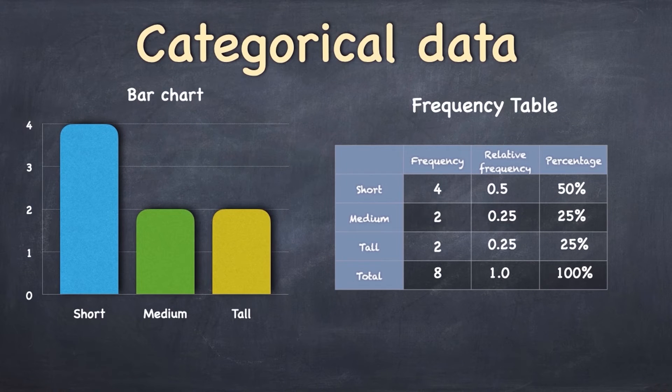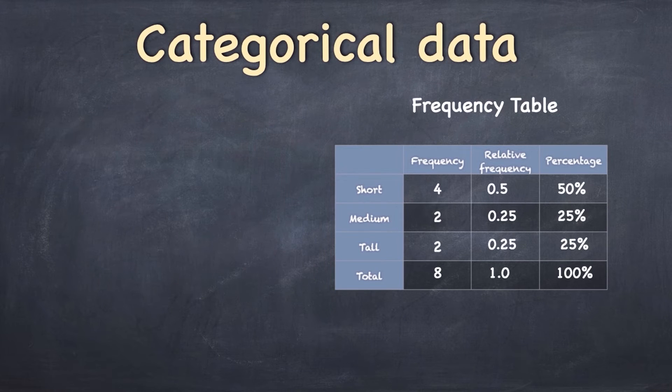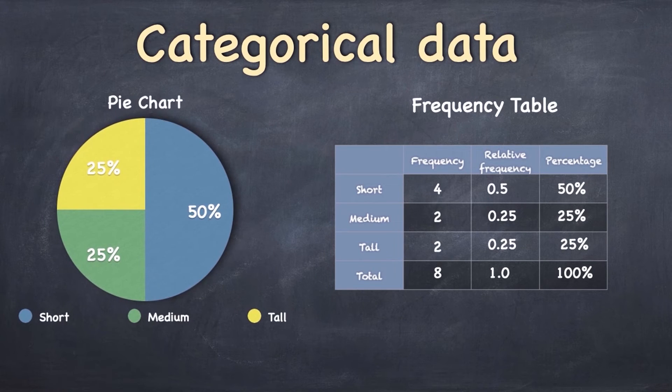If we want to visualize this data, of course, we can use a bar chart where the height of the bar is either the actual number of observations or the relative frequency or the percentage. An alternative is to use the pie chart. There are different reasons for using different graphs at different times. I'm not going to get into that today.